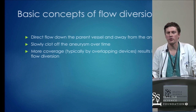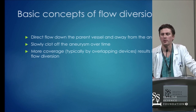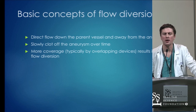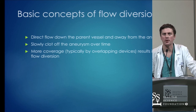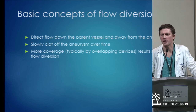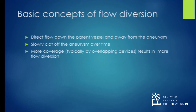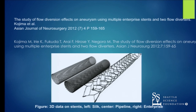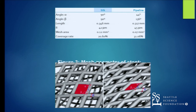The basic concept of flow diversion is to direct blood flow away from the aneurysm with slow thrombosis in the aneurysm over time. We can increase the amount of flow diversion either by having more braids in the stent or by putting more stents in situ. A lot of studies have been done both in the lab and with models looking at how much flow diversion you get depending on stent design, and it can get pretty technical.